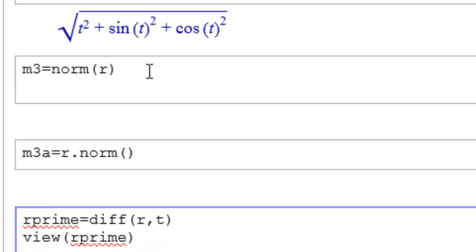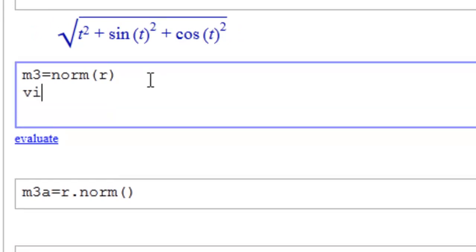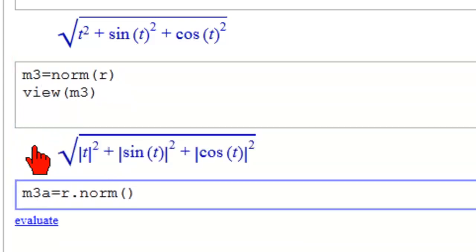Now let's look at the norm command as opposed to the absolute value command. So let's hit enter and write view M3 here. Hit evaluate. And it's slightly different, and it has absolute value signs in here, which is the same because it's being squared.